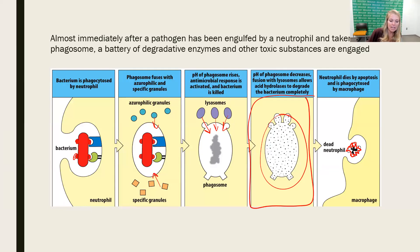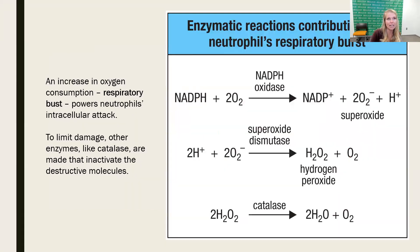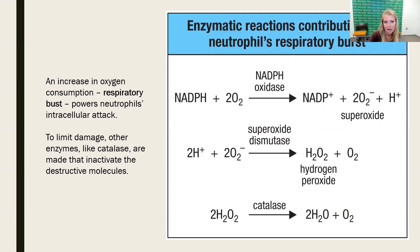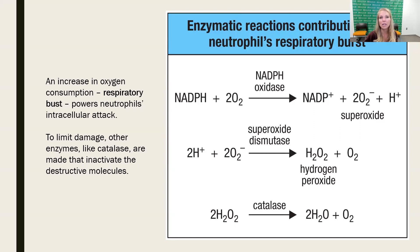Part of the killing of bacteria inside the phagolysosomes involves respiratory burst — the superoxides that are part of the neutrophil's intracellular attack. These superoxides are very potent against bacteria and will degrade them. Hydrogen peroxide will rapidly kill a bacterial cell, and then the cell produces catalase to break down that hydrogen peroxide into oxygen and water so it's no longer toxic after it has killed the bacteria.